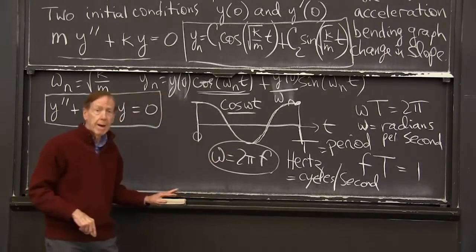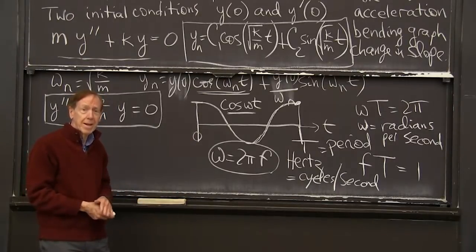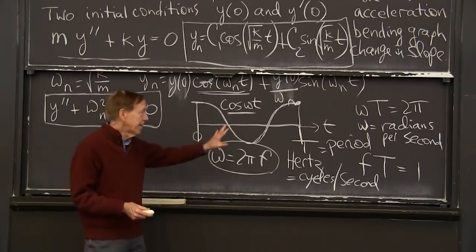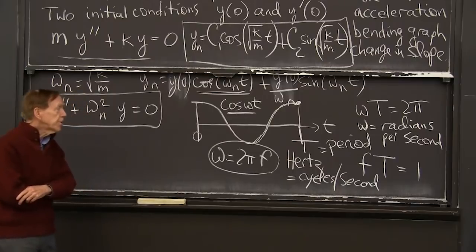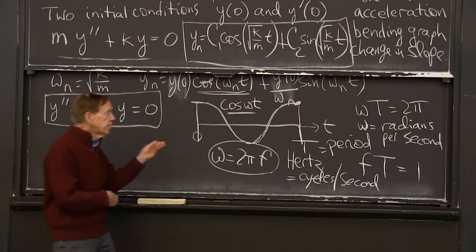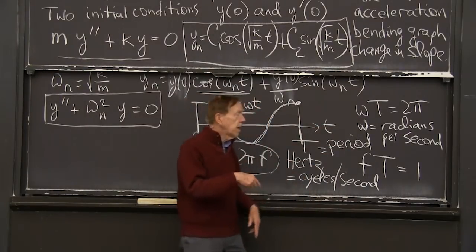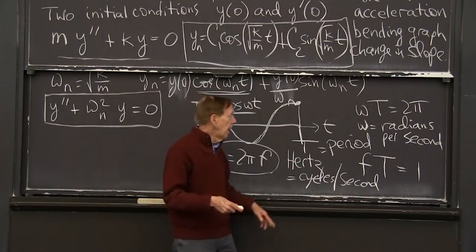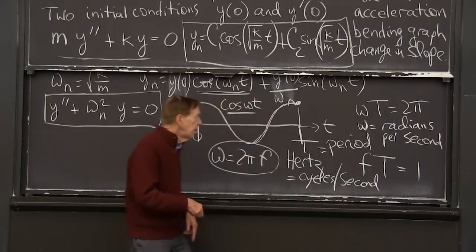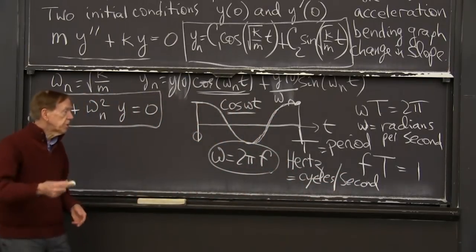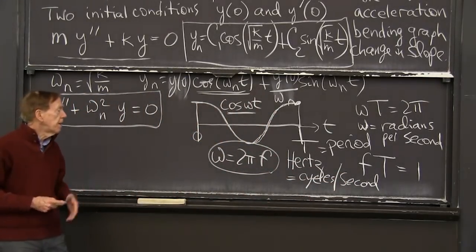2 pi radians. This isn't big, heavy math, but it's more important than a lot of math just to get these letters straight. So there's capital T, the period, and two measures of frequency. One is omega in radians per second, and the other is f in full cycles per second. So one is 2 pi times the other.